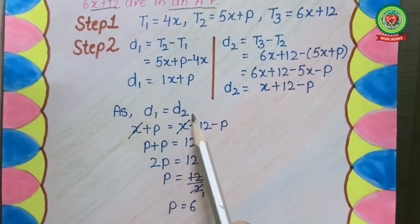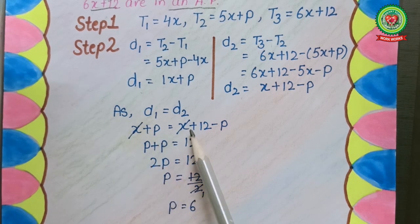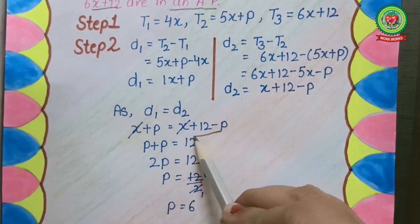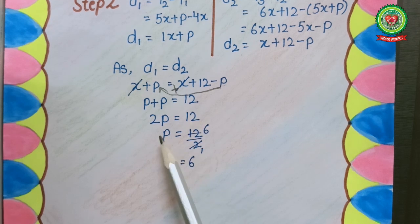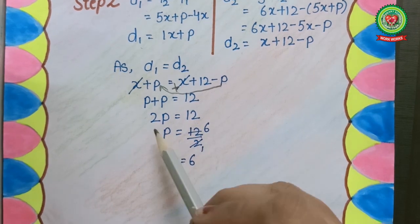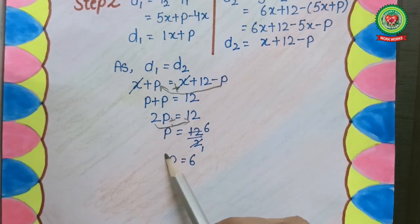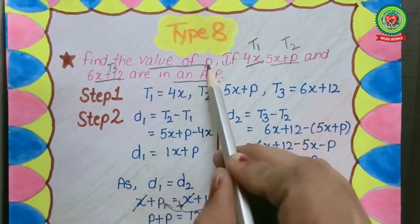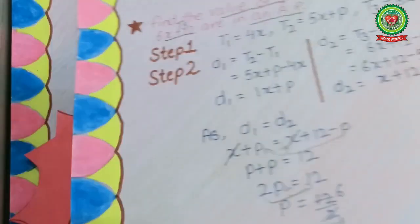We put the values, and the x terms on both sides cancel out. Collecting the like terms, p will go to the other side changing to plus p. So p plus p equals 12, giving 2p equals 12. Dividing both sides by 2, the value of p is equal to 6. Here we only needed to find the value of p, so the answer is p equals 6.